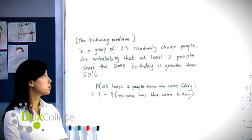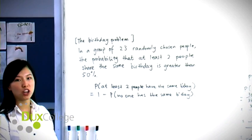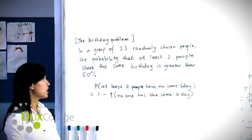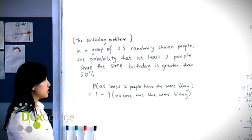In a group of 23 randomly chosen people, the probability that at least two people share the same birthday is greater than 50%. So today we actually want to show that this is true.